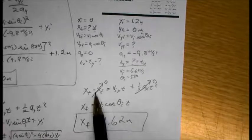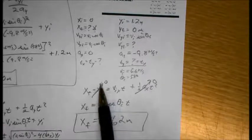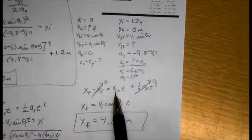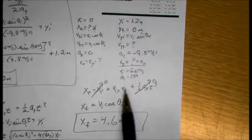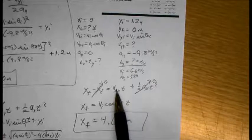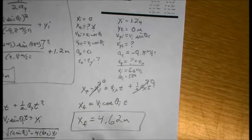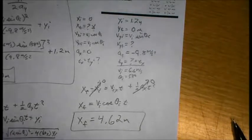And once we have a solution for time, we can just go to the x dimension. We know it starts at the origin. We know the acceleration is zero. So x final equals v initial x multiplied by time. And v i x can just be expanded to v i cosine theta. Again, you can plug the numbers in and you get to 4.62 meters.